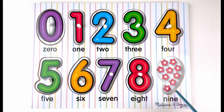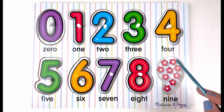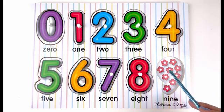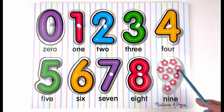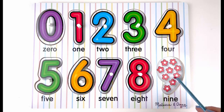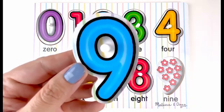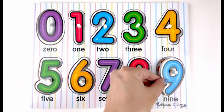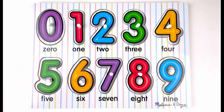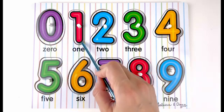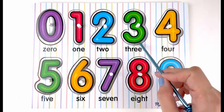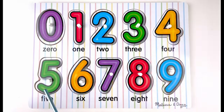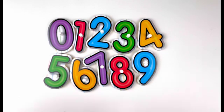How many flowers do you see here? One, two, three, four, five, six, seven, eight, nine. Nine flowers. Now let's count all these numbers together: zero, one, two, three, four, five, six, seven, eight, nine.